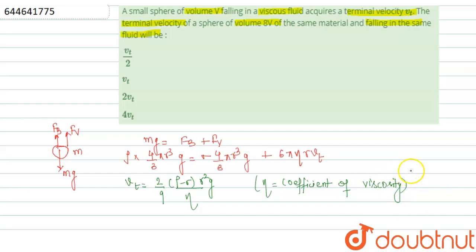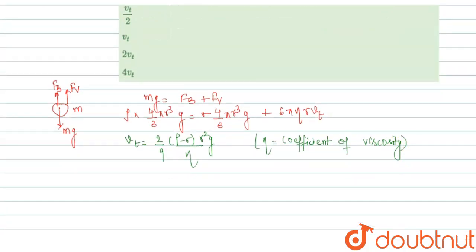According to the question, initially the volume of the sphere is V and finally the volume becomes 8V. From this formula, we can see that the terminal velocity is directly proportional to r², where r is the radius of the sphere.